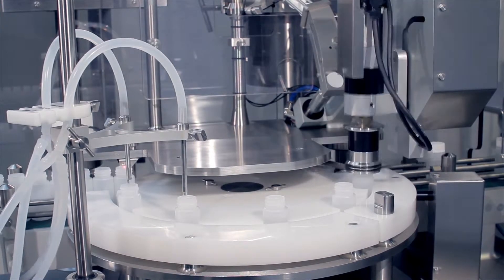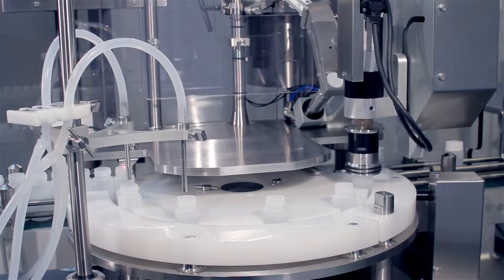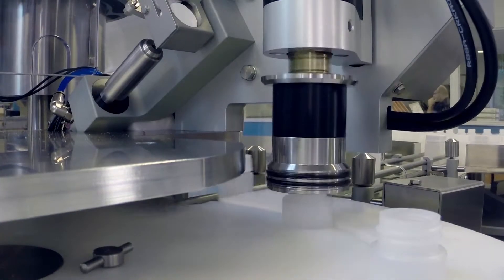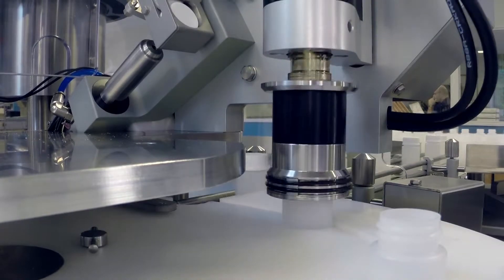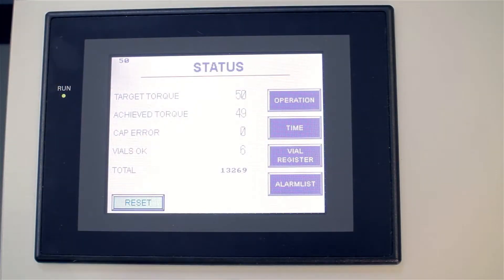Capping torque is precisely controlled and monitored. This prevents leakages due to fluctuating air pressure in storage or transit. As the torque on every container is monitored, QA departments will benefit from easy process validation.